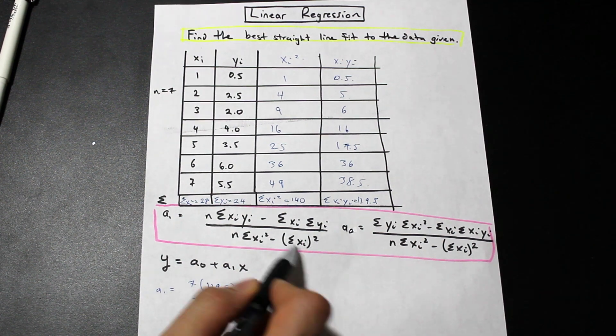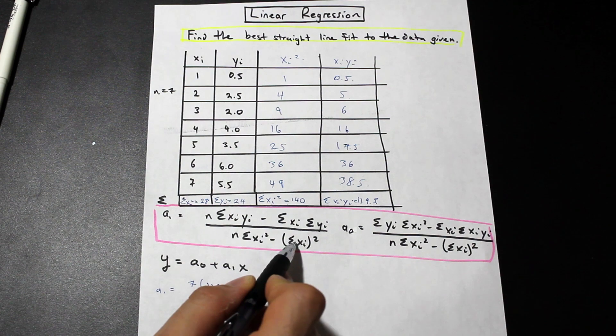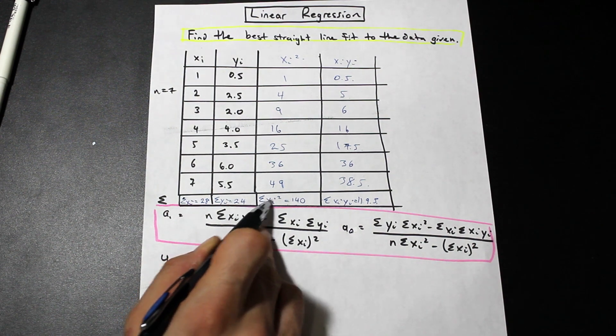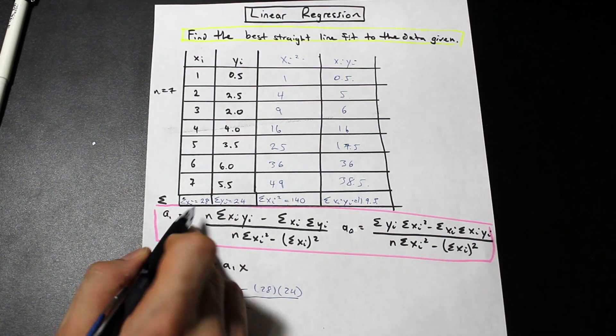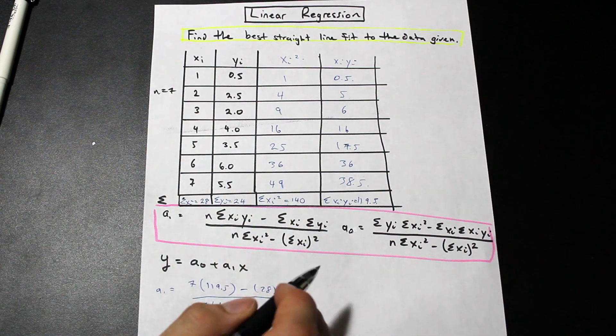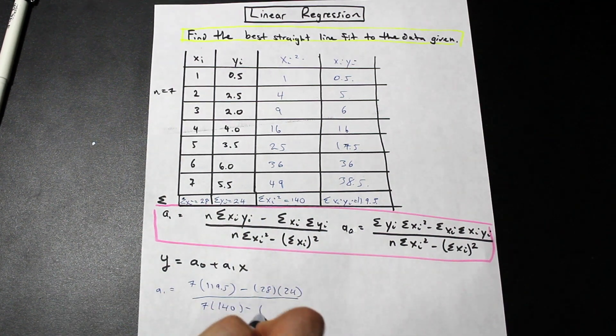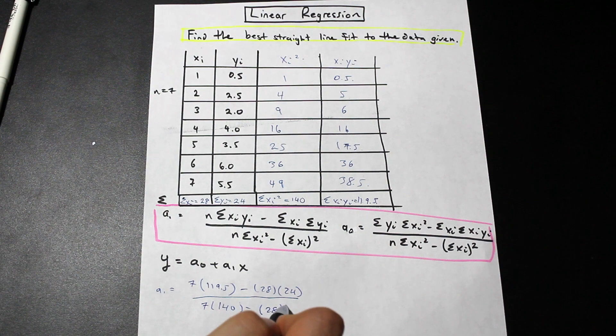You can see here, there's a little bit of a trick in this formula. We have the summation of xi squared. So it's not summation of the xi squareds. It's the summation of all the xi's and then that number squared. So don't make that mistake there. That's going to be 28 squared, not 140.